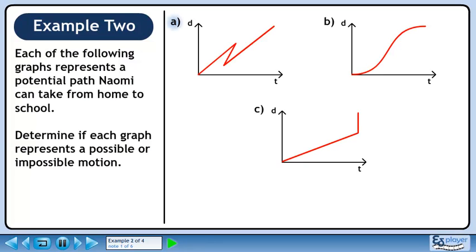Each of the following graphs represents a potential path Naomi can take from home to school. Determine if each graph represents a possible or impossible motion.